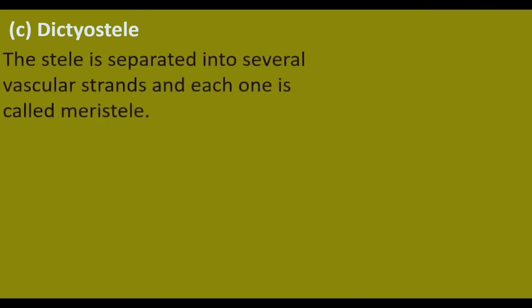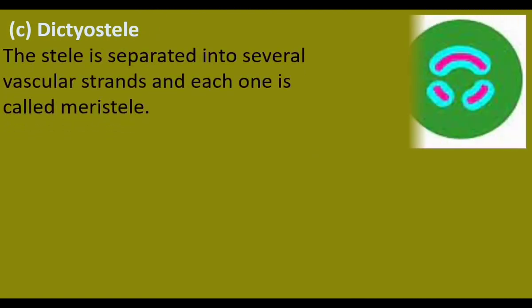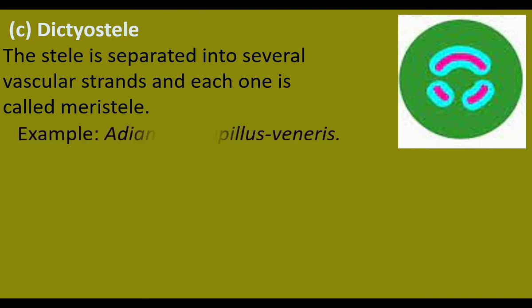Dictiostele: the stele is separated into several vascular strands, and each strand is called a merestele. This diagram shows three meresteles. Example: Adiantum capillus-veneris.